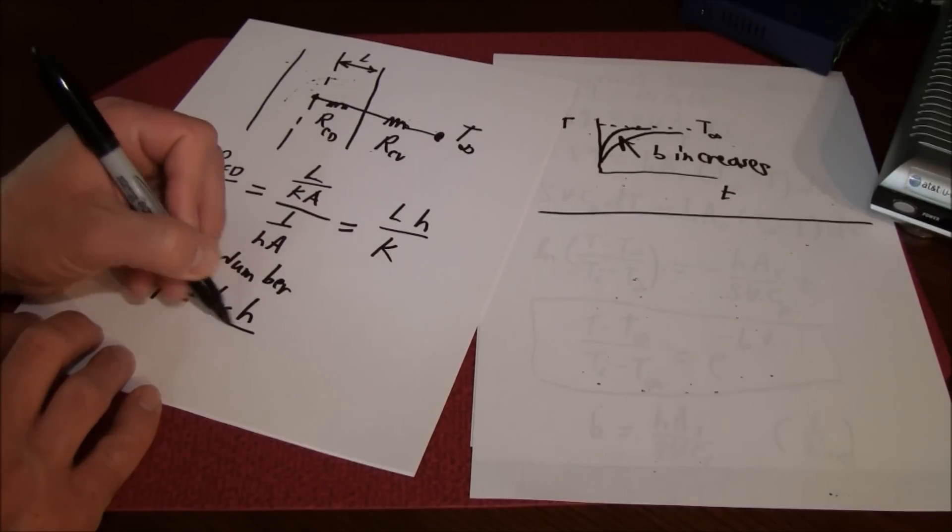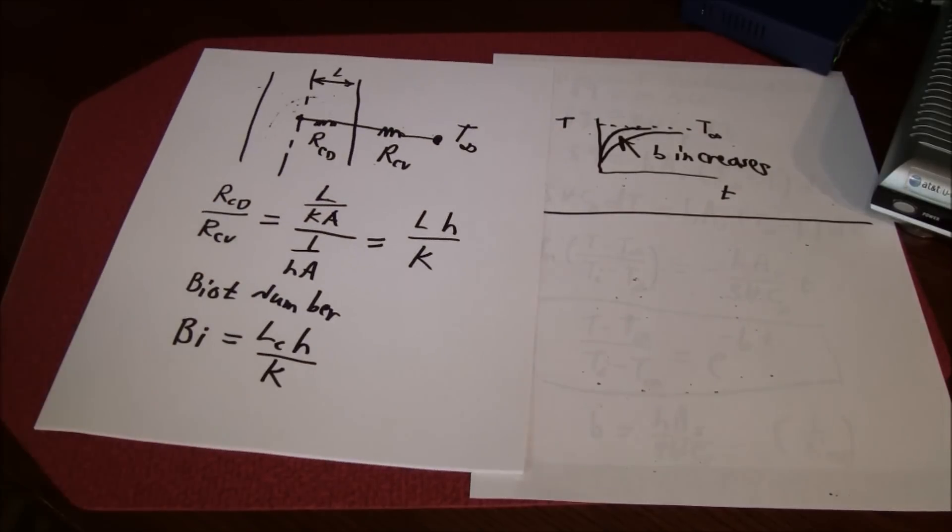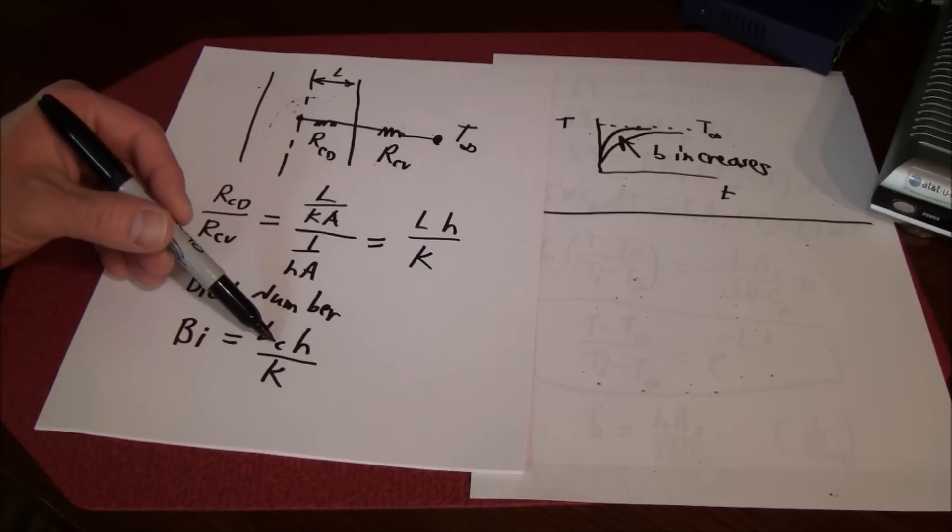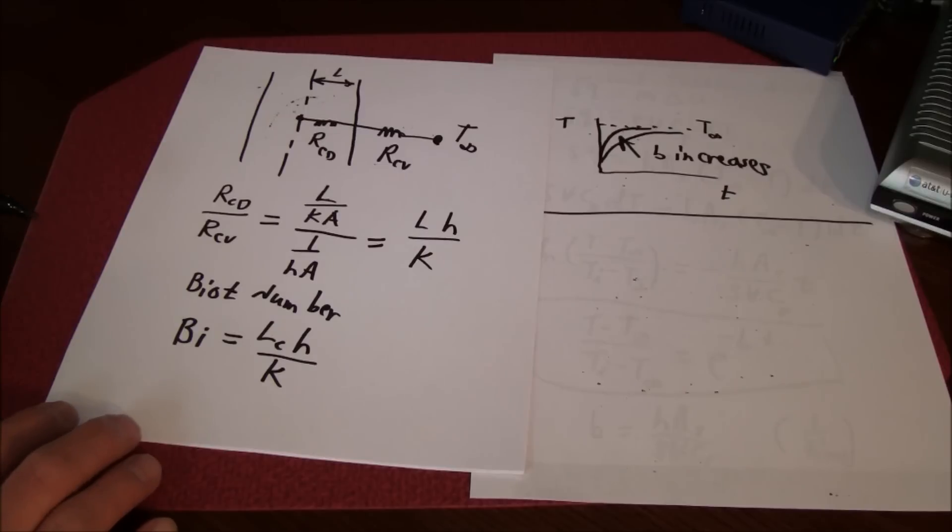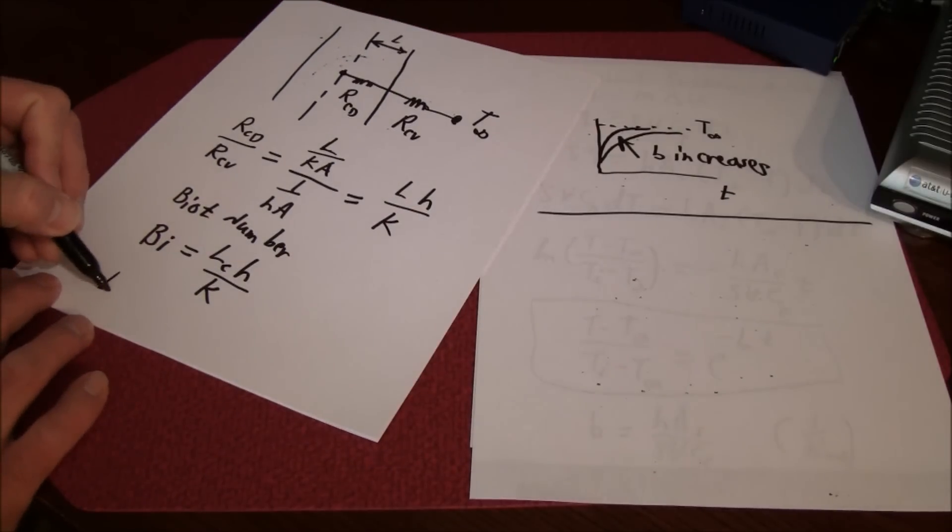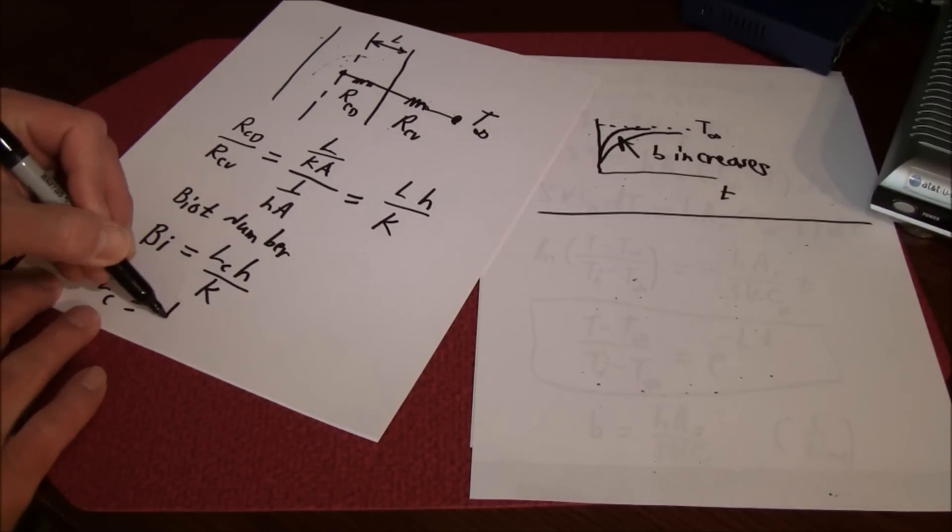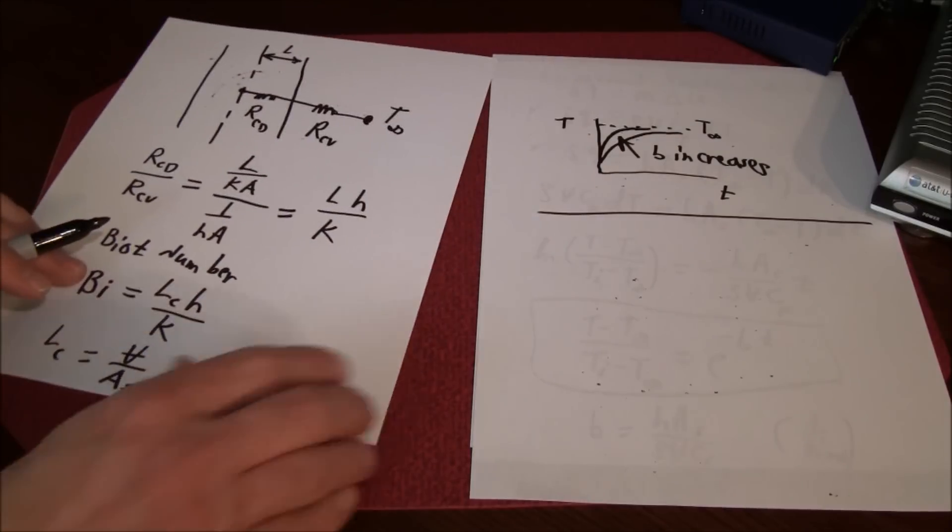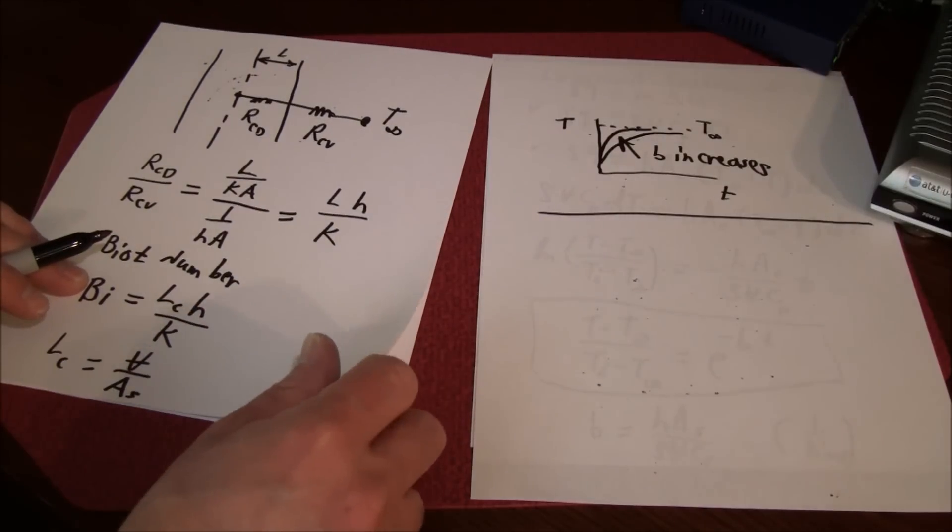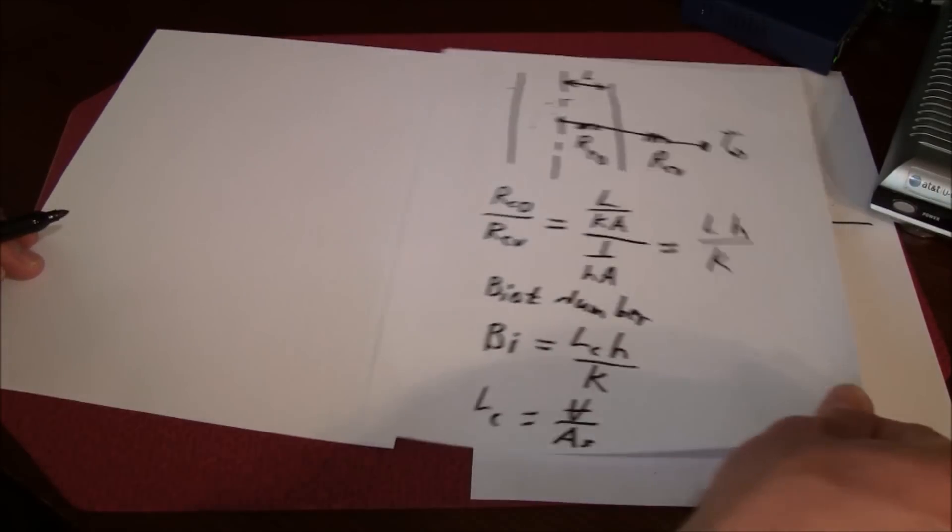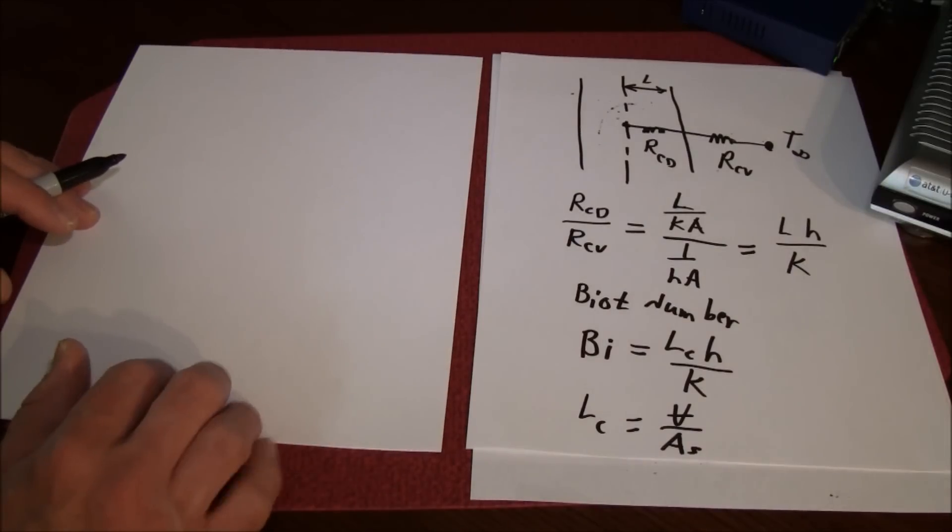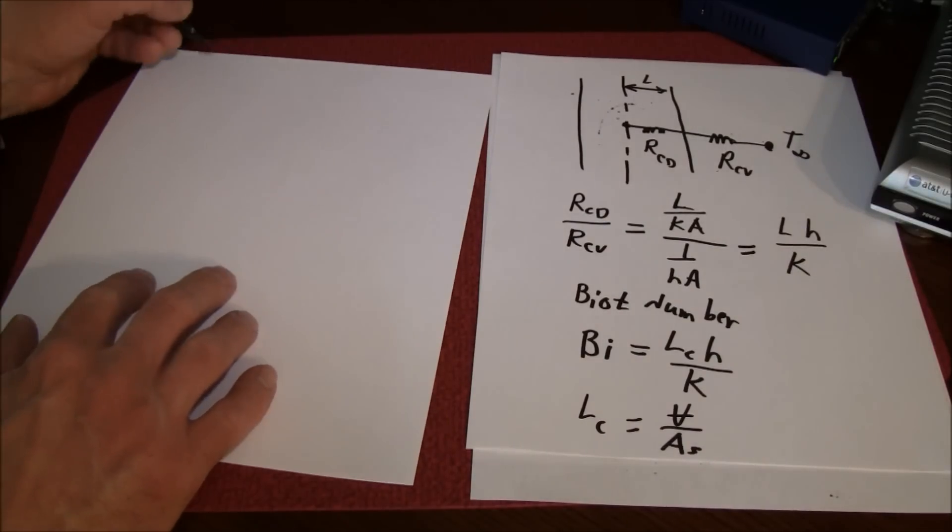The Biot number is equal to L sub c h over k. In the Biot number we just use a characteristic length and that characteristic length is volume divided by surface area.